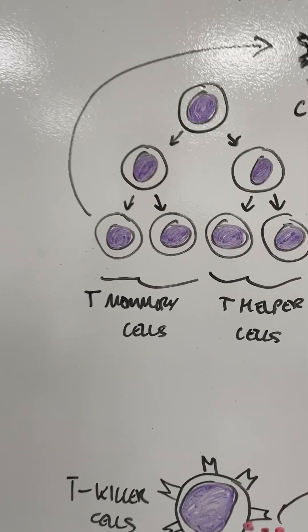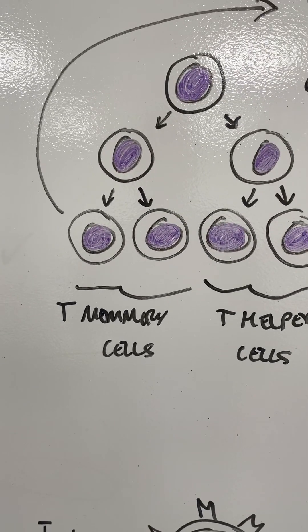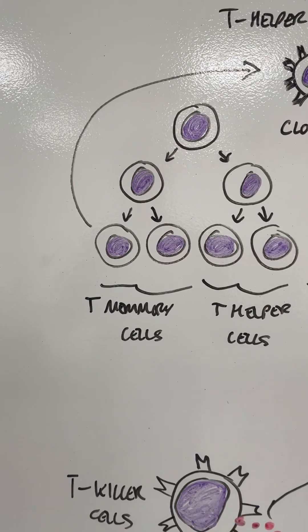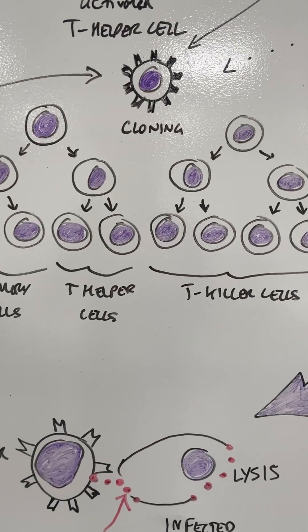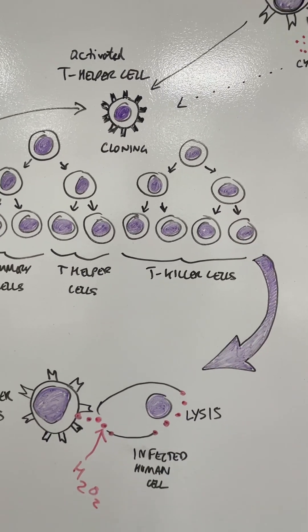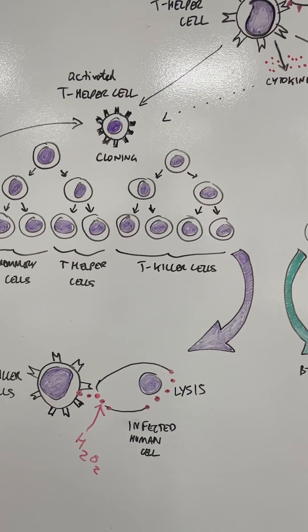Some of them will become memory cells so that you can store that immunological memory long term if you get the same infection again. Some become more T helper cells which will go back and be involved again in stimulating further parts of the immune response.